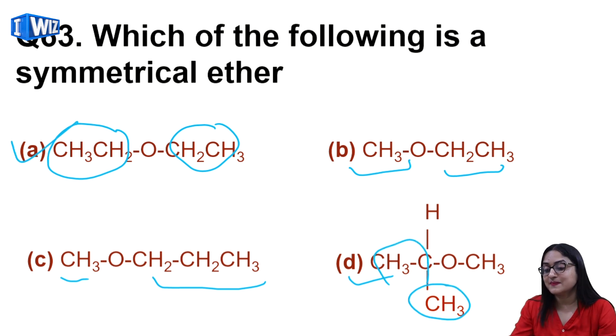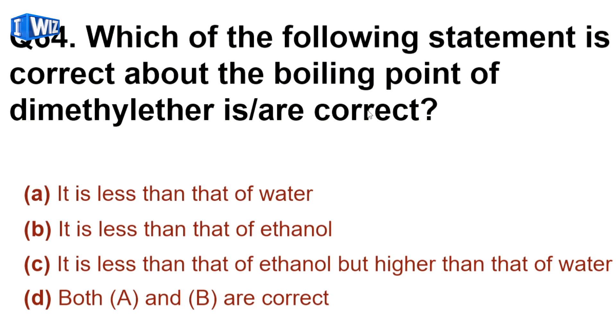Which of the following statement is correct about the boiling point of diethyl ether? The options are: it is less than that of water, it is less than that of ethanol, it is less than ethanol but higher than water, and both A and B are correct. Ether has boiling point less than water and also less than ethanol, so D is the correct answer.